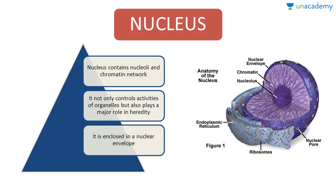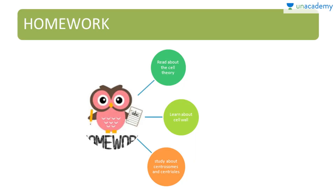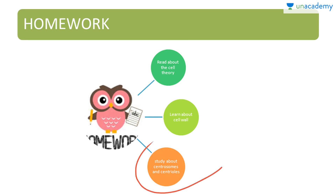The nucleus contains the nucleolus, which you can see here, and the chromatin network. The nucleus not only controls the activities of organelles — it is the controlling unit — but also plays a major role in heredity. It is enclosed in a nuclear envelope, which you can see here. The homework this time is to read about the cell theory, learn more about the cell wall, and study about centrosomes and centrioles.